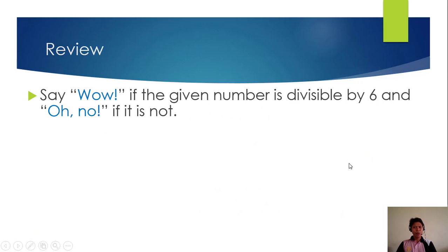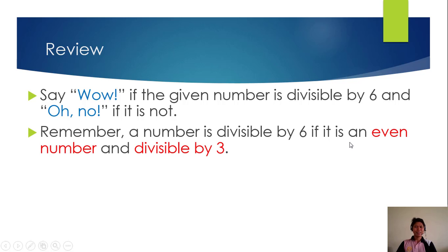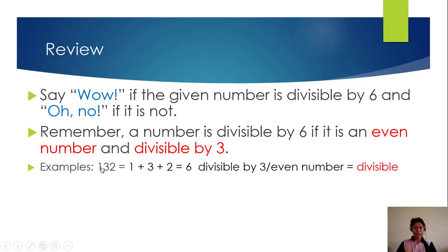This time we'll have a review with the divisibility rules for 6. Say 'wow' if the given number is divisible by 6, and 'oh no' if it is not. Remember, a number is divisible by 6 if it is an even number, or divisible by 2, and divisible by 3. It means it is divisible by both 2 and 3. Example: 132. It is an even number. 1 plus 3 plus 2 is 6, which is divisible by 3 and an even number, therefore it is divisible by 6. So you say 'wow.'